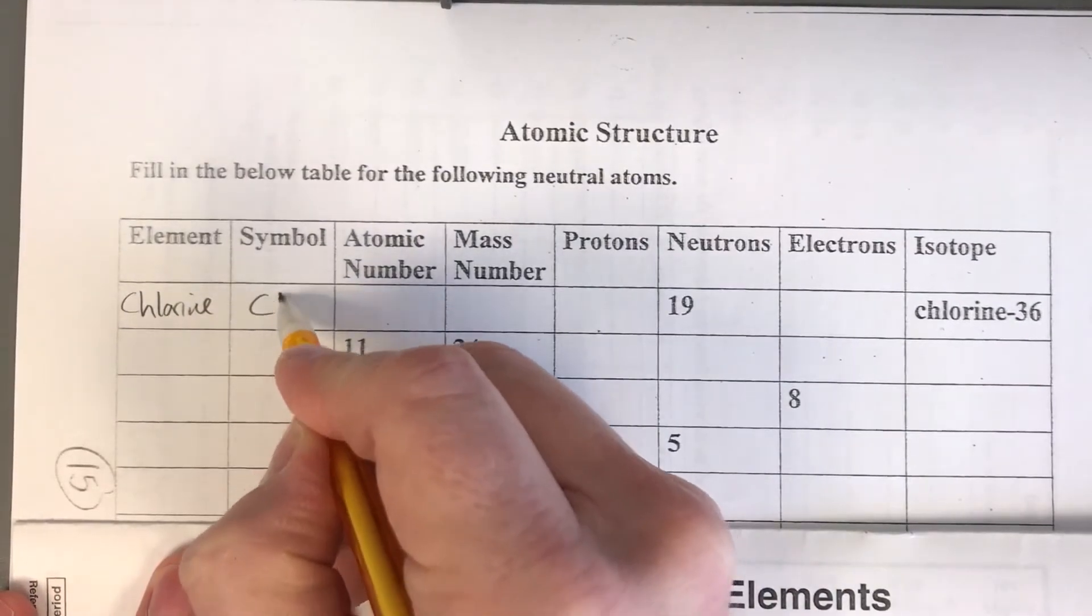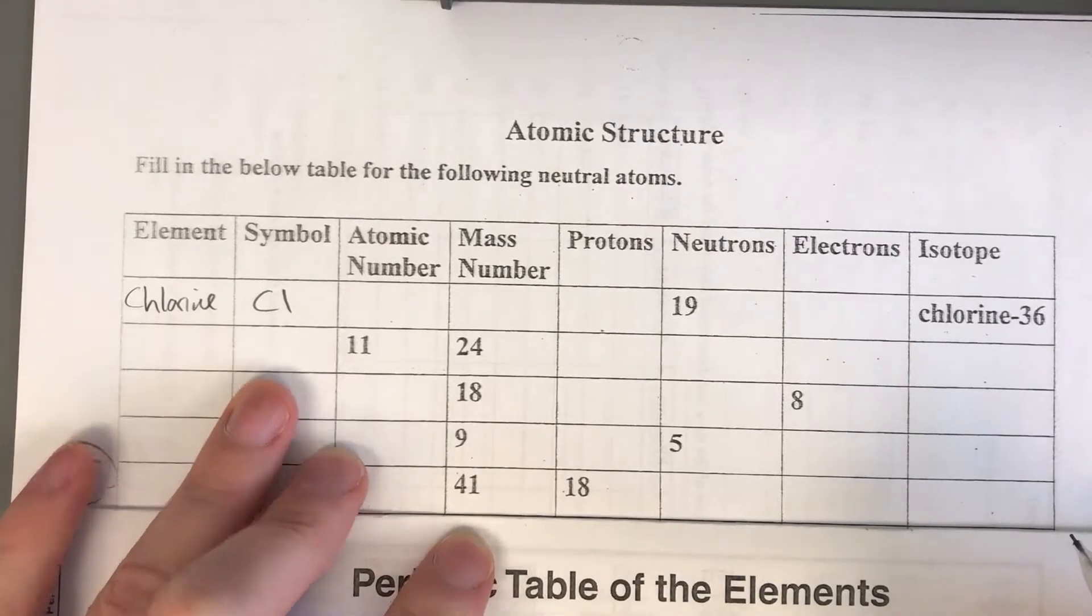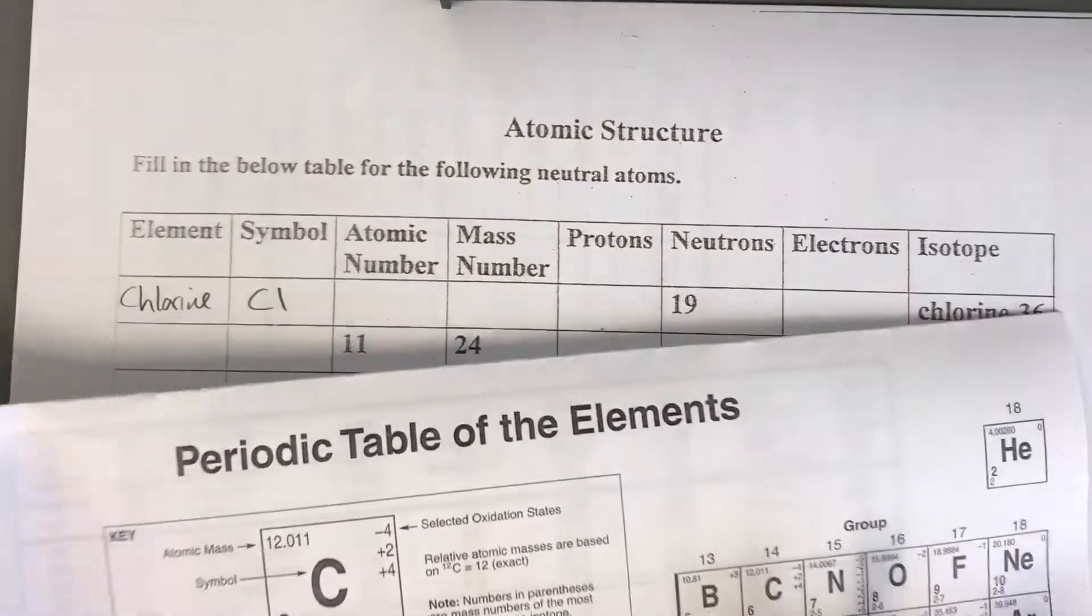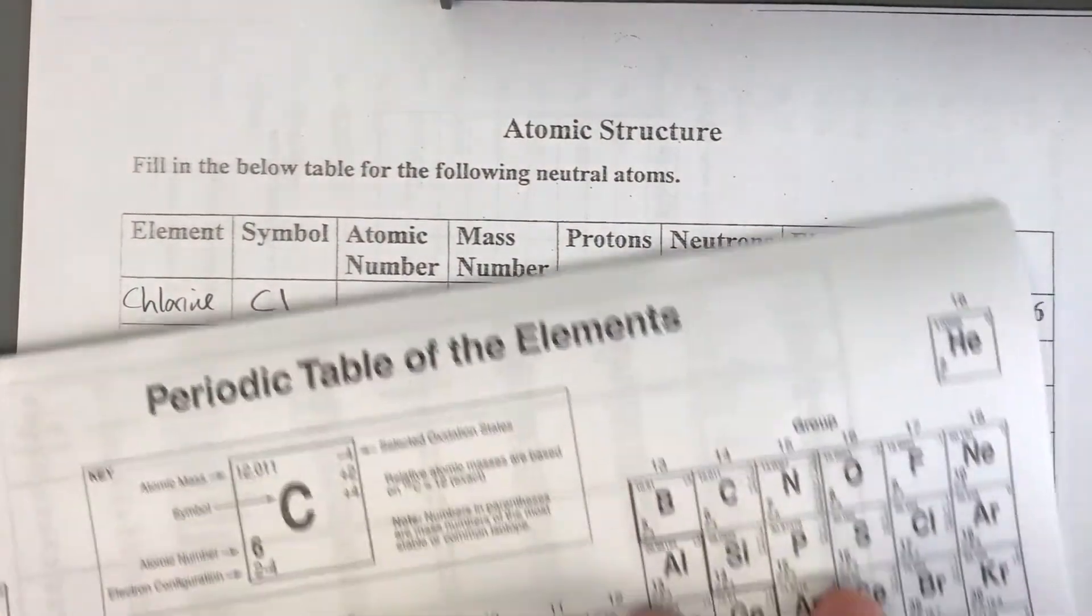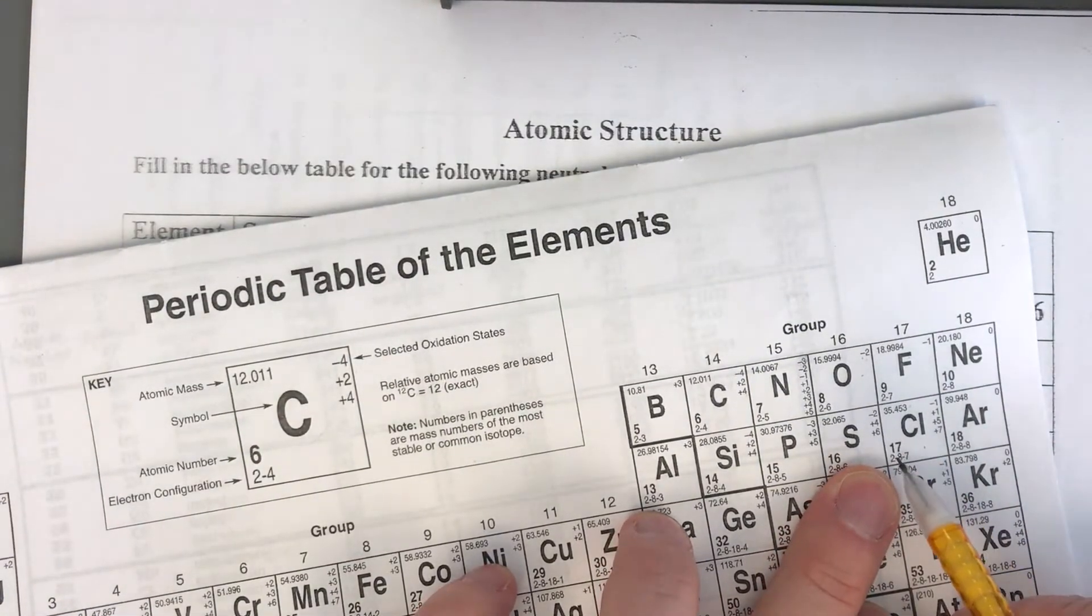The element of course we would fill that in - that's chlorine. The symbol CL. Remember your first letter is always capital, second letter is always lowercase. When we look that up over here we see chlorine is atomic number 17. CL is number 17.